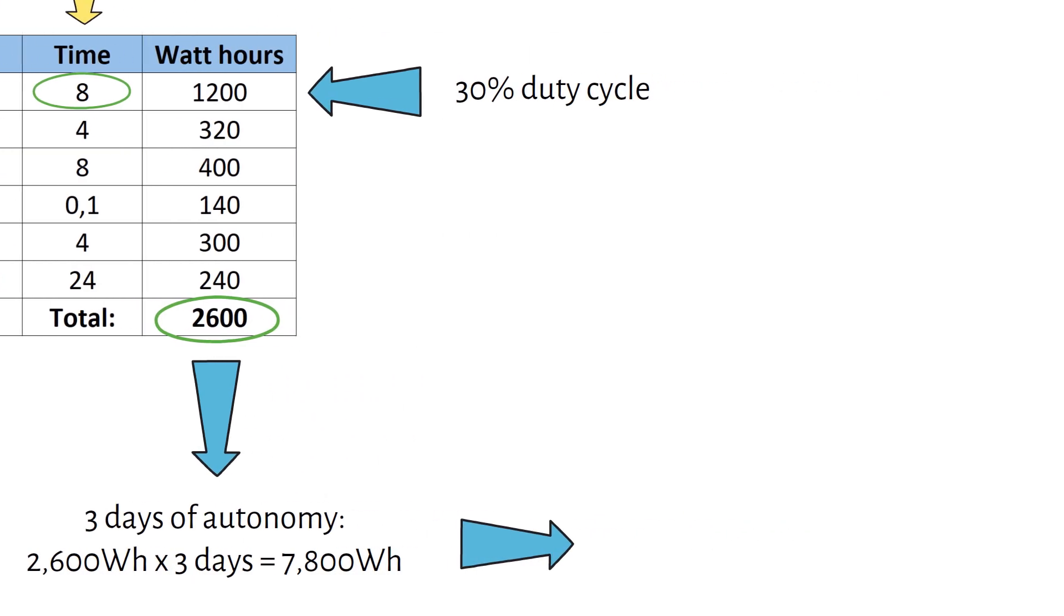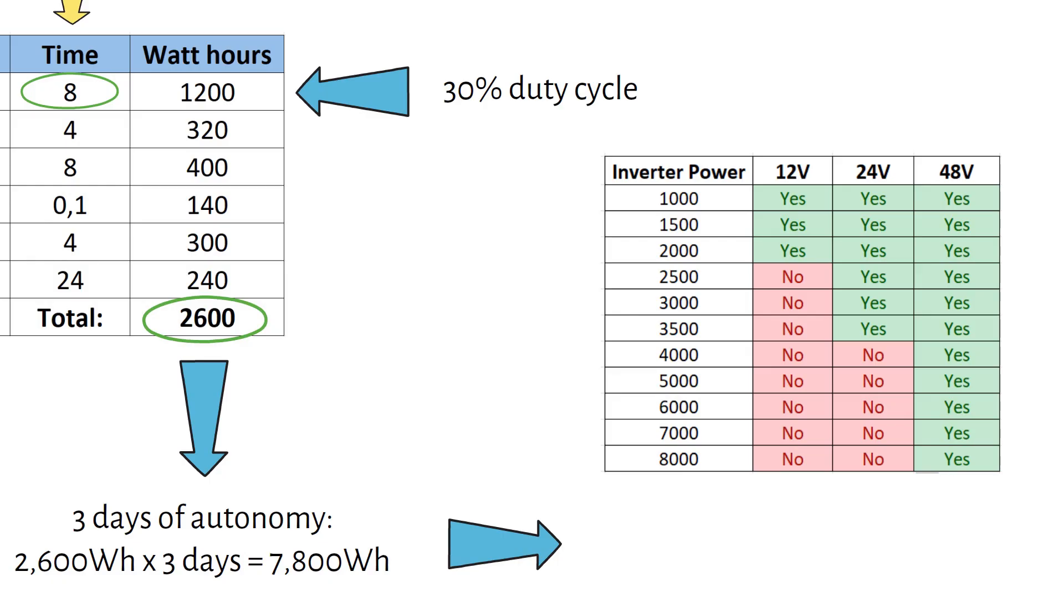Next, I choose the battery voltage based on the inverter's maximum current draw. I recommend 12 or 24V for vehicles, and 48V for cabins or backup systems. If you want a 2000W inverter, 12V just falls within the green zone.